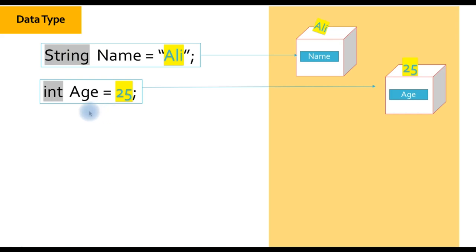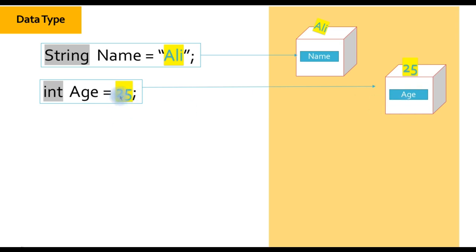So if you want to put a number inside a variable, you should change the data type. For example, if I want to store age inside a variable, we should not use a string type. This time we have another variable — the type is 'int', the name is 'age', and it equals a number. We can put a whole number inside the int type variable, whether it is minus 25 or 25.